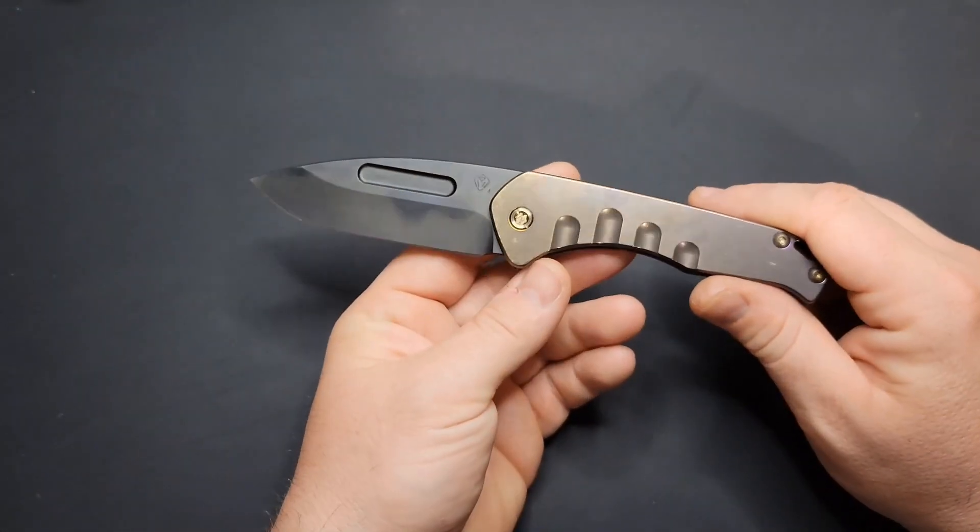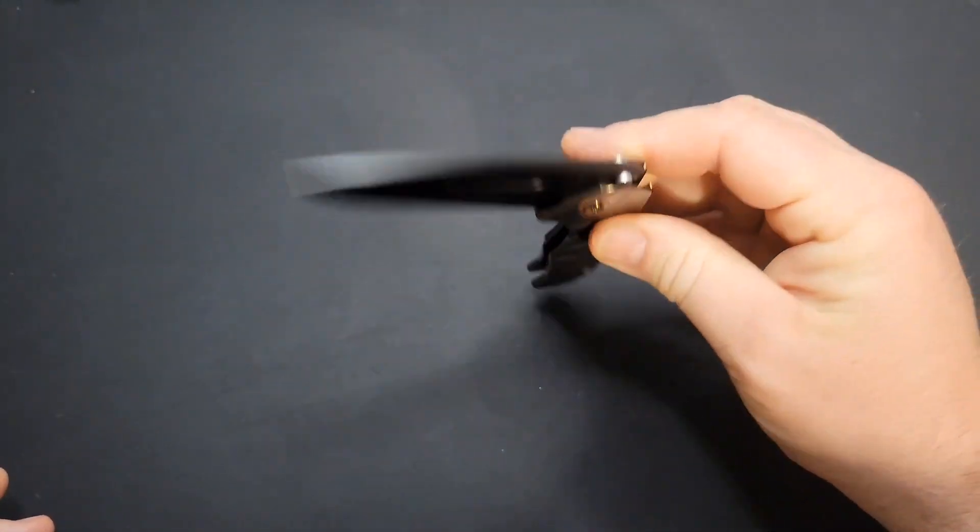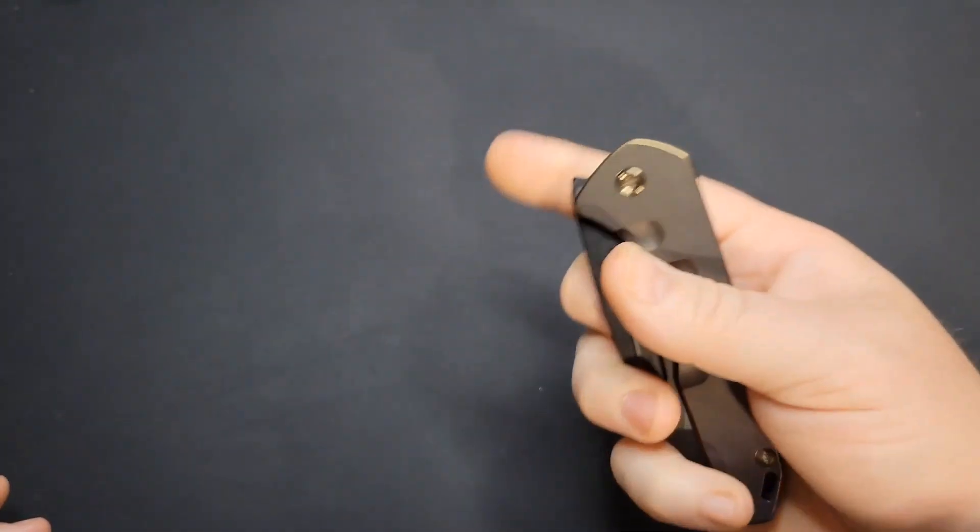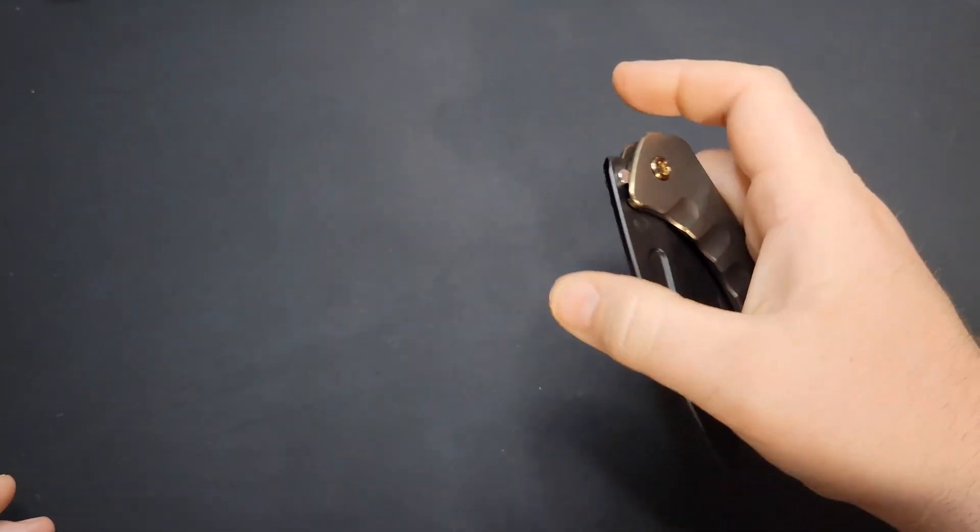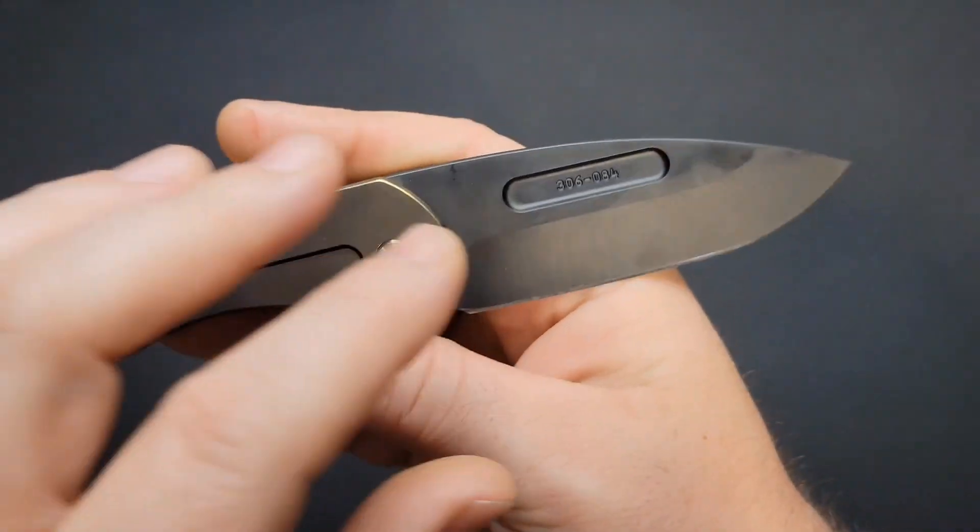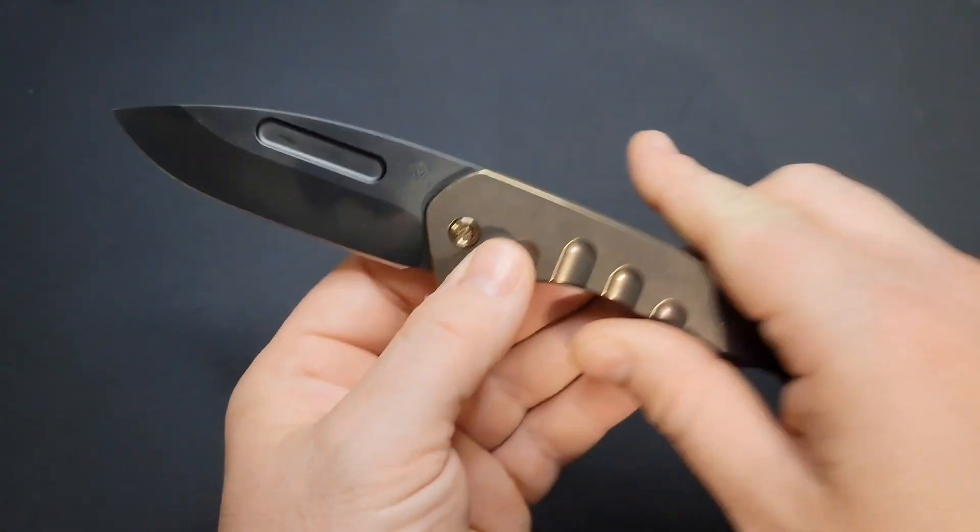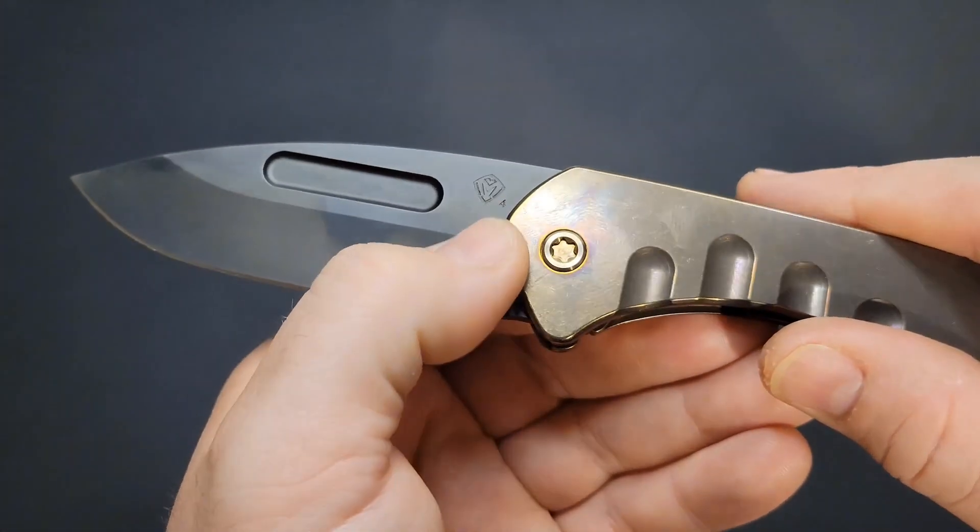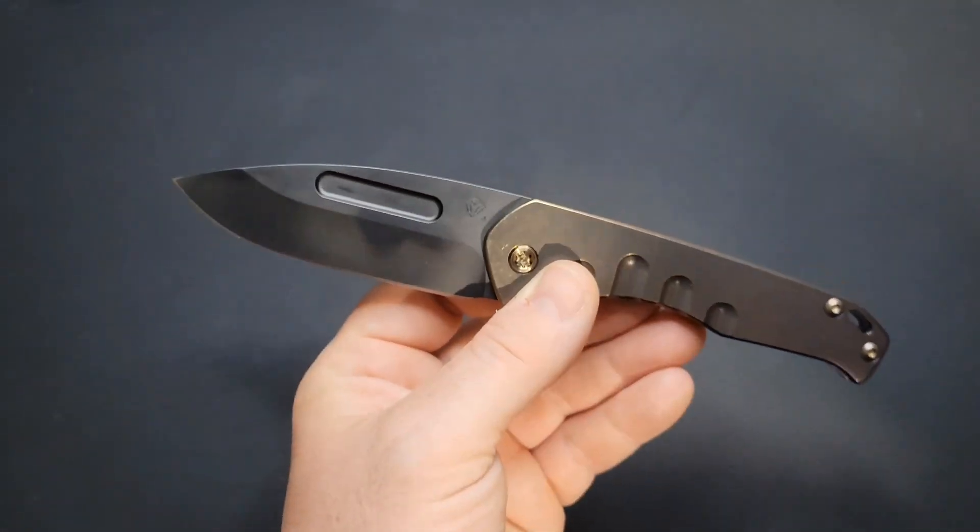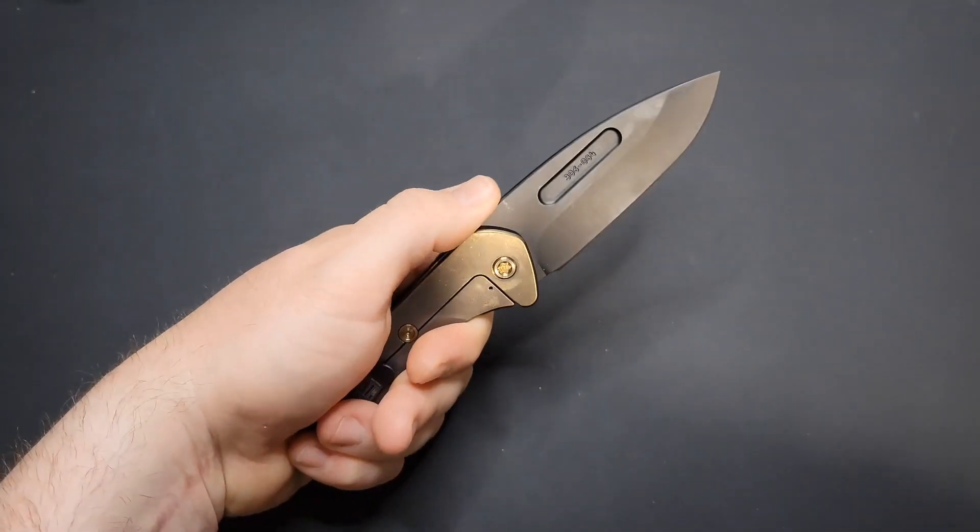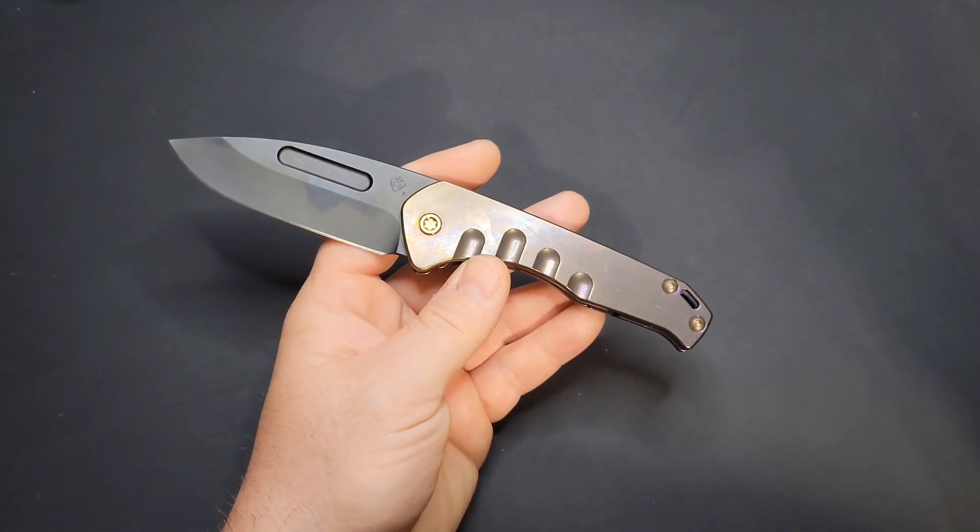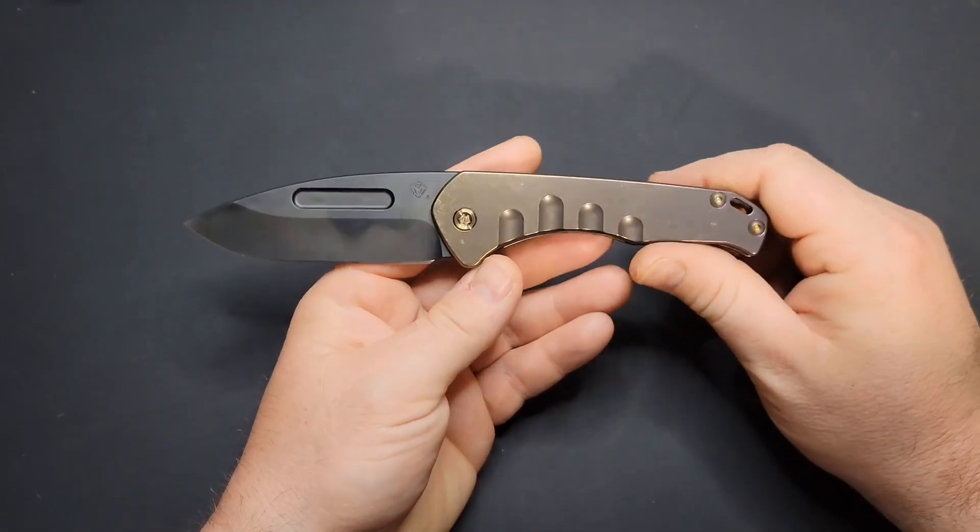If it's not running on bearings, it would shock me, as most Medfords are on phosphor bronze. But I think this particular one, the Praetorian Slim, seems to be riding on bearings. If it's not, it would really surprise me because it's pretty smooth. It's not dropping or falling shut, but it does have a smooth action that kind of makes it feel like it's running on bearings. On the blade you got the model serial number right there, and on the other side you got the Medford logo, the M. Like I said earlier, that four is for S45VN.